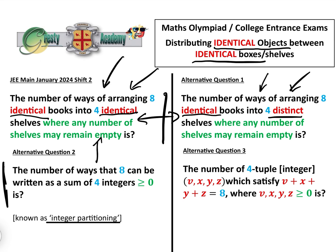That is identical question to that, and it is different from this question, the number of four-tuple integer v, x, y, z, which satisfy v + x + y + z = 8, which is identical to that. All of this is to do with whether the boxes or shelves are identical or distinct. In these two, they're distinct, and in these two, they're identical.